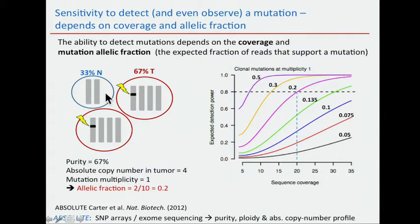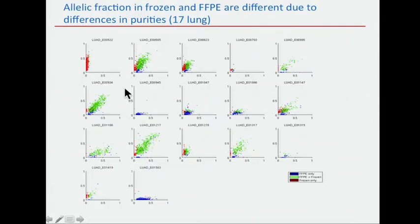This is a slide you've all seen from me: when you call mutations, the ability to find mutations depends on the allelic fraction of the mutation, which depends on the purity of the sample. Given the allelic fraction, the coverage tells you the probability of finding the mutation. So if you have two different pieces of the tumor with different purities, you don't have the same chance of finding the mutation, even if it's clonal. Indeed, some samples have reasonably the same purity and we find most mutations in both. But some samples have very different purity between the FFPE and the frozen, and we basically don't find any of the mutations — either they're all red or all blue. We need to look sample by sample to explain those differences.